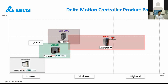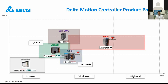Hopefully in Q4 or beginning of next year, we will have AS500 in two models — one for EtherCAT and one for CANopen, like DVP. The DVP-MC and AS500 have the same motion functionality; only the PLC part is different. Also at the beginning of next year, AX3 will be released, which is also COTSYS-based with EtherCAT communication. This is our current roadmap.